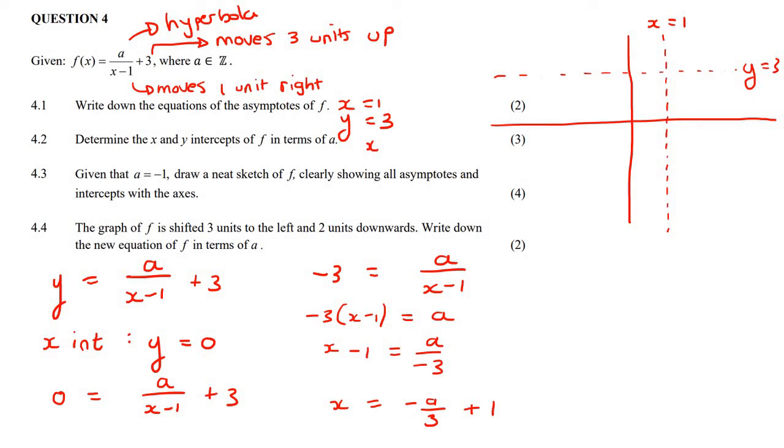So the x intercept, but they want the x intercept. We must remember that with the x intercept, y is zero. So we must say minus a over three plus one and zero. Now we need to go get the y intercept. So to get a y intercept, what do we do? We make x zero. So we're going to get y equals to a over zero minus one plus three. And that's going to end up getting y equals to minus a plus three. So the x is zero, and the y is minus a plus three.